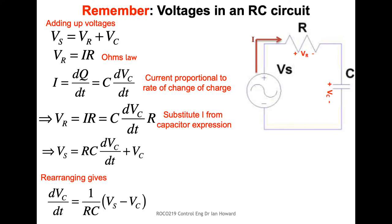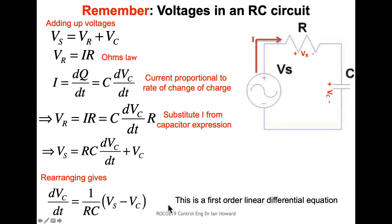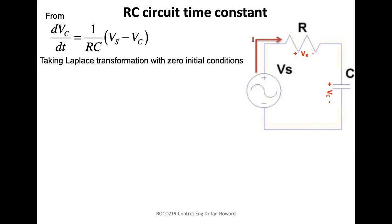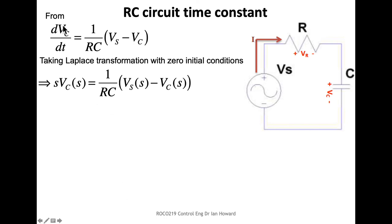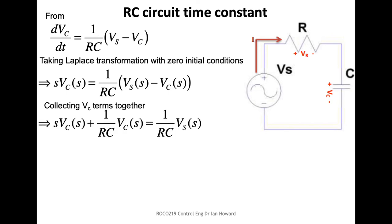Therefore, the applied voltage equals RC*(dVc/dt) plus the capacitor voltage. Rearranging, the rate of change of capacitor voltage equals (1/RC) times (source voltage minus capacitor voltage). Taking the Laplace transform with zero initial conditions: dVc/dt goes to s*Vc(s), and the other terms change to s-domain values.